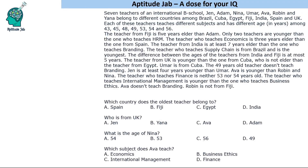Hello everyone, welcome to Aptitude Jab. This problem states that there are 7 teachers who belong to different countries and have different ages. Teachers, country, and age are given, and they also teach different subjects. Based on the given conditions, we have to find out which teacher teaches which subject, is of what age, and from which country.